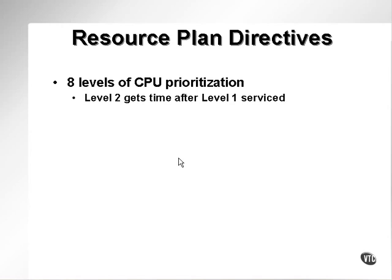If user A is executing something and he happens to be level 2 in whatever resource consumer group he's in, and another user comes along — user B — and he has level 1, level 2 will be switched out and level 1 is switched in. So effectively, what you've got is prioritized processing.